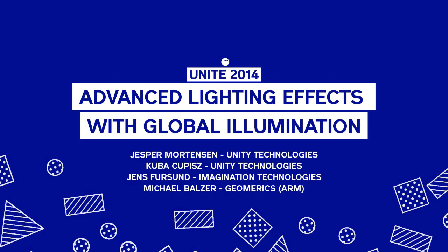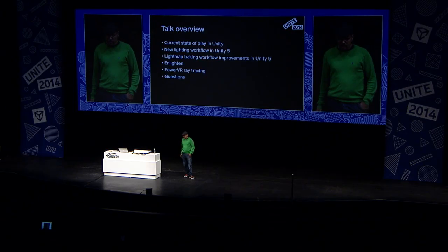First, I'm going to start off talking about what we have currently and what we are moving to — our new lighting workflow, and also for the in-game lighting as well. I'm going to be talking about what we've done for baking, because I'm sure some of you will still be using baking for some titles where it's appropriate. Then I'm going to hand off the mic to Michael, and he'll be talking about how Enlighten works and what it does for us. And finally, Jens will be talking about the PowerVR stuff that we also integrated. And we'll take some questions at the end.